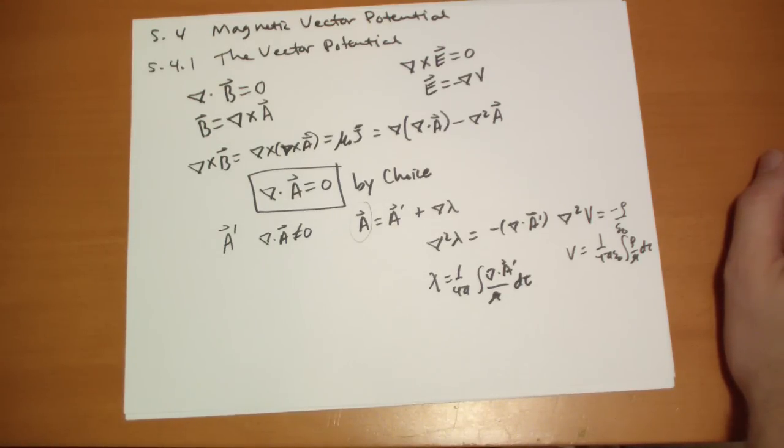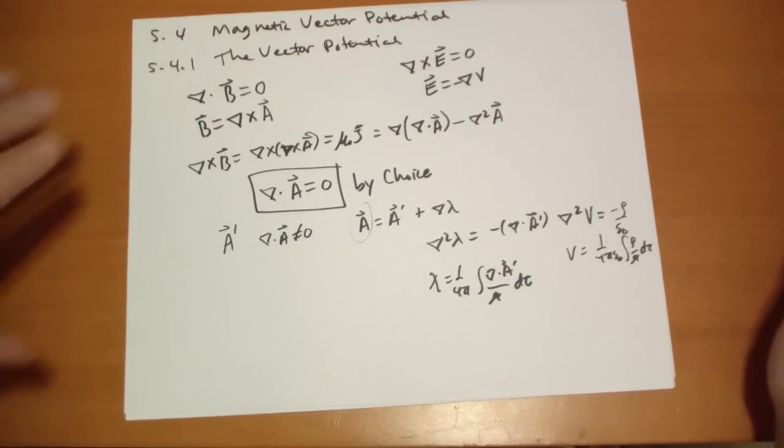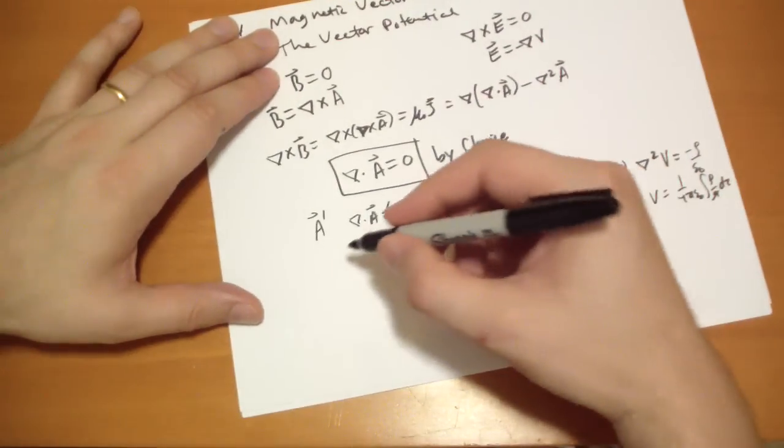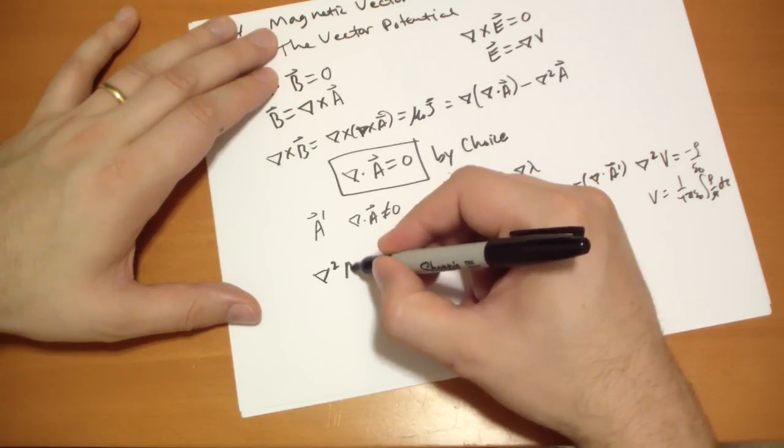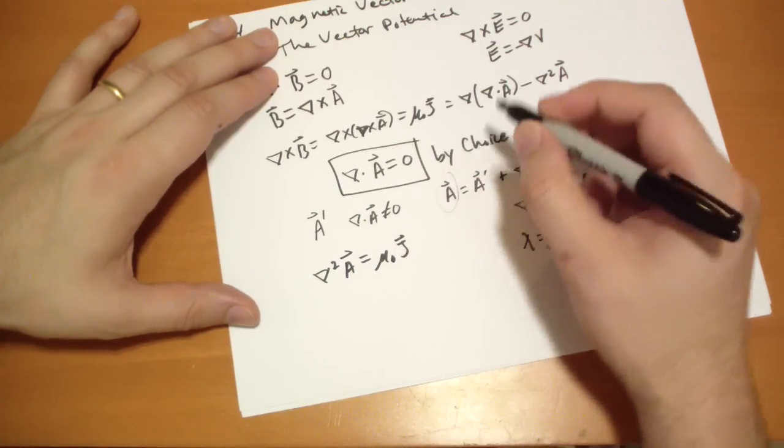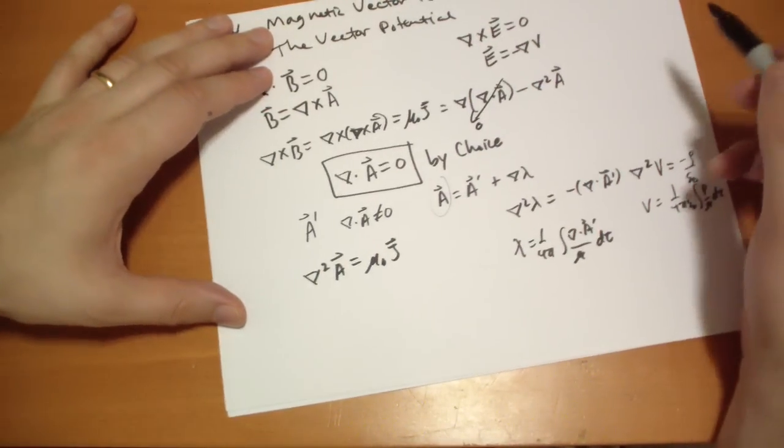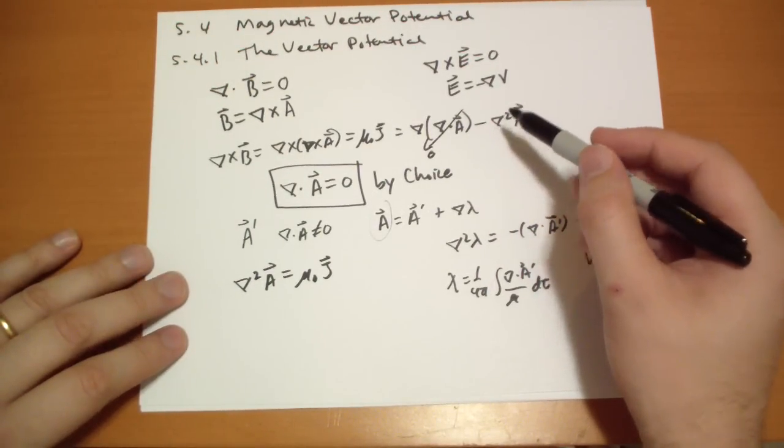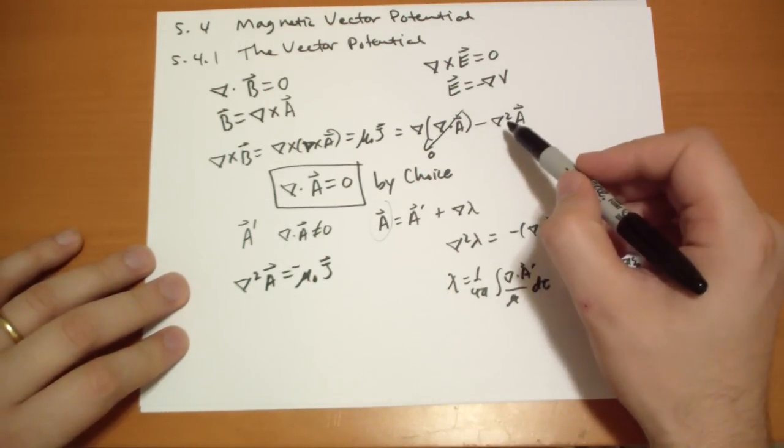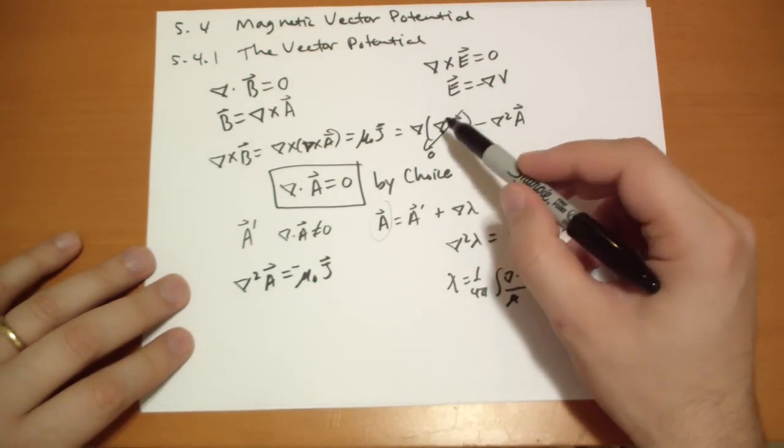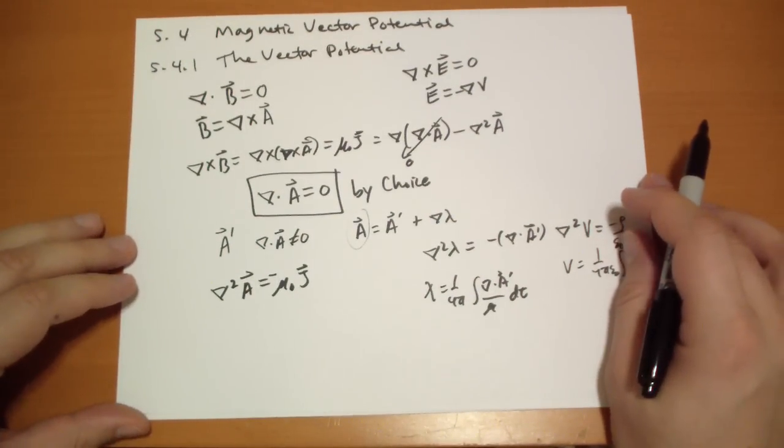So Ampere's law becomes this. This becomes zero by choice, and so we have the, oh, I need a negative sign there. The Laplacian of the magnetic vector potential is equal to the current.